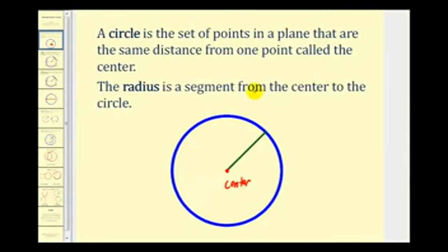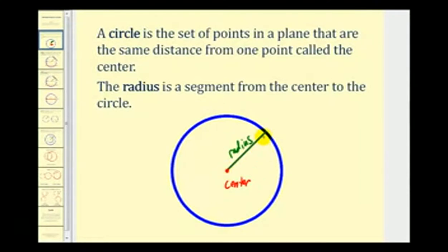The radius is a segment from the center to the circle, which we see here in green. The length of the radius represents the distance from the center to all of the points on the circle.